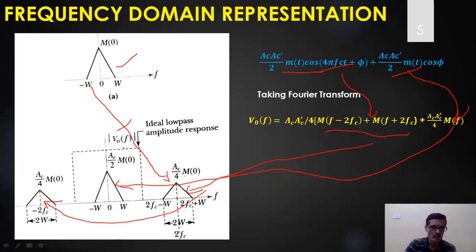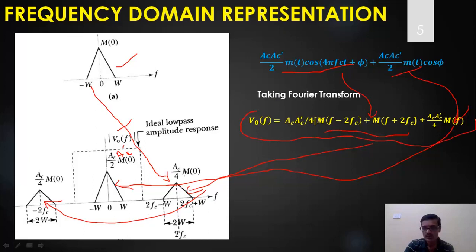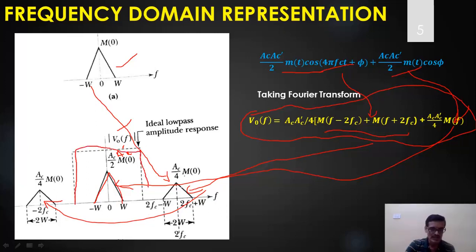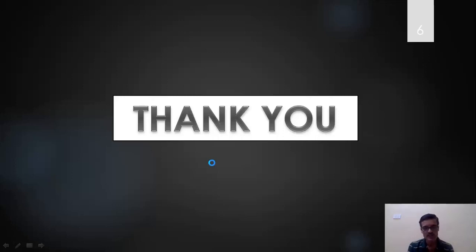The magnitude is Ac·Ac'/4. If I pass this entire signal through an ideal low pass filter with an appropriate cutoff response, the components centered at ±2fc are rejected and only the baseband spectrum M(f) passes through. The output of the low pass filter recovers the message signal. In this video I have explained how to demodulate a double sideband suppressed carrier signal using coherent demodulation. Thank you for watching.